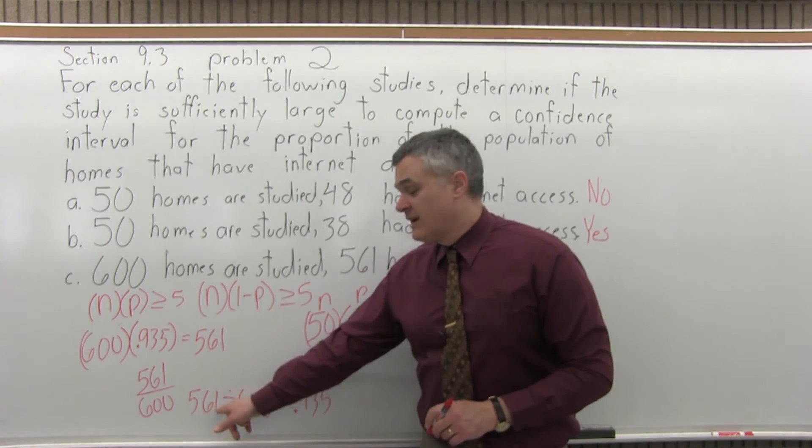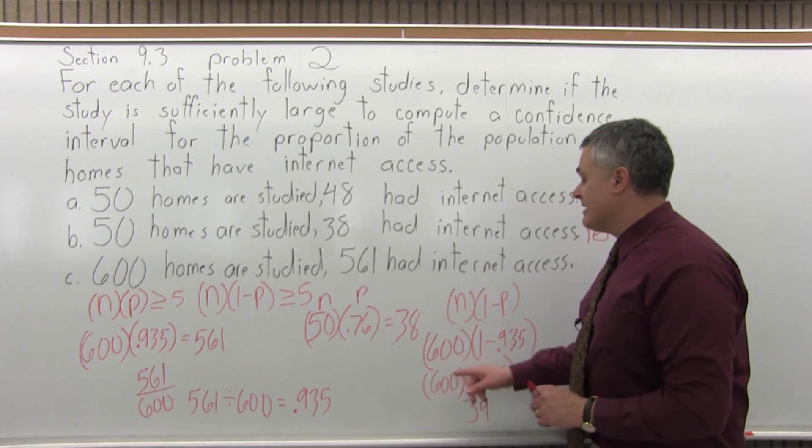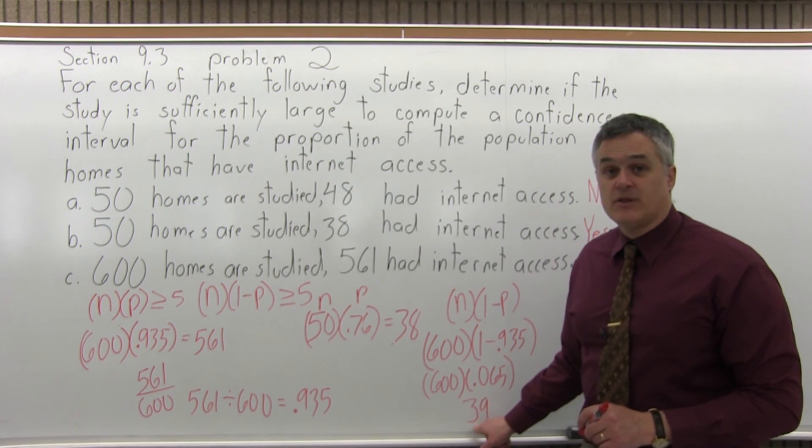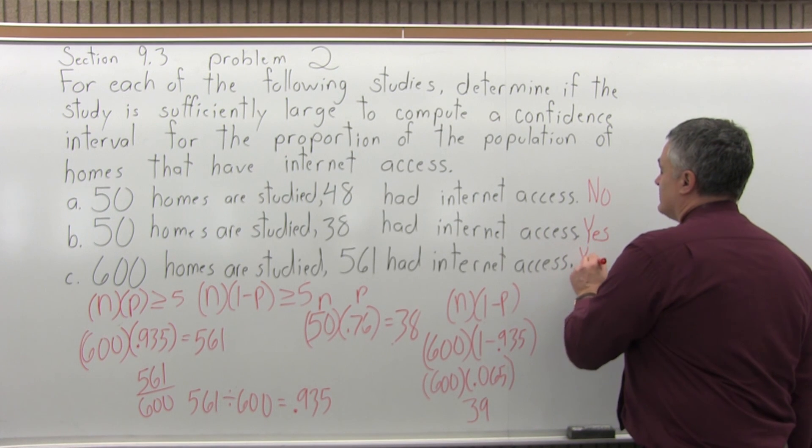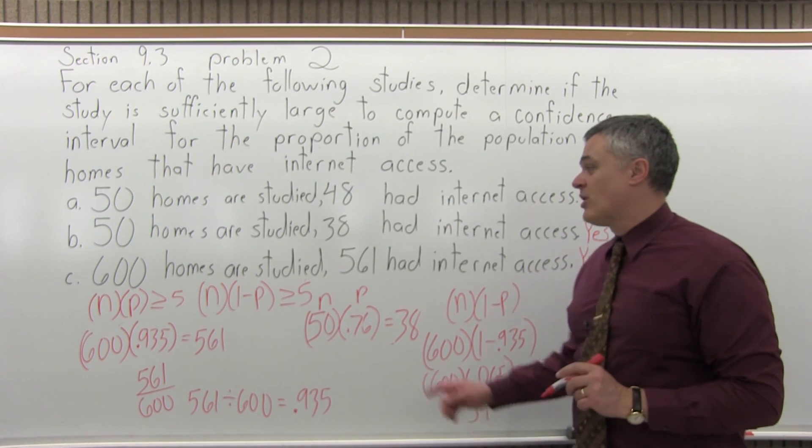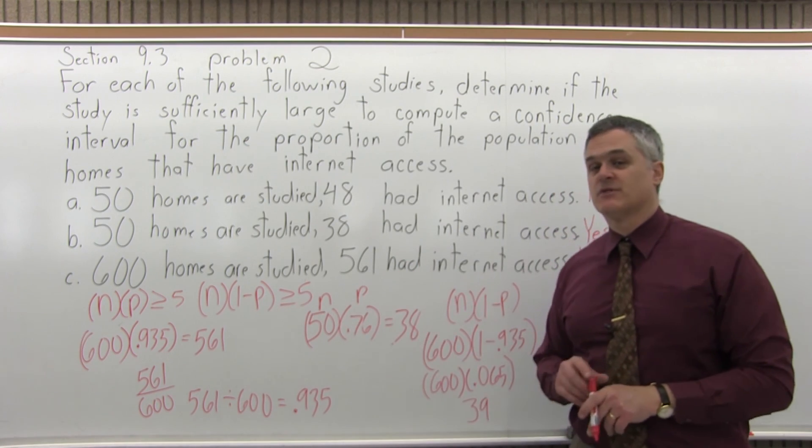So, n times p is bigger than 5 at 561. n times 1 minus p is bigger than 5 at 39. So, the answer for part c, is my study sufficiently large to make the confidence interval I'm looking for? Yes, it is sufficiently large.